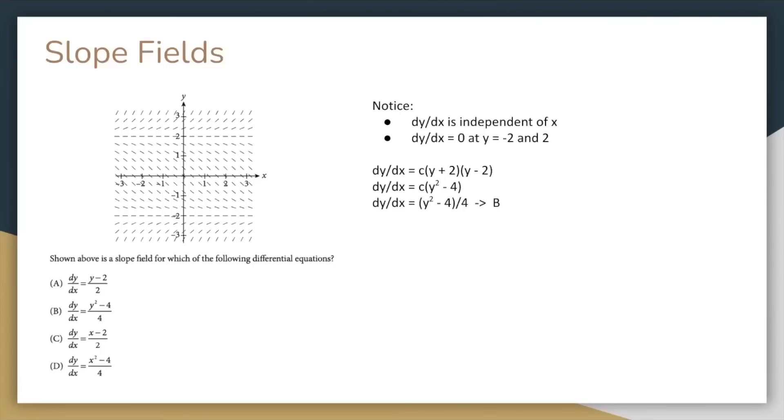Here's an example of a question that asks you to find the differential equation of a shown slope field. Notice that the slope at any point is only dependent on y and not dependent on x, and that the slope is zero when y equals negative 2 and 2. This suggests that dy over dx is of the form some constant c times y plus 2 times y minus 2. After distributing, the only answer option that is of this form is b.